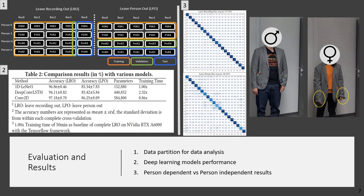A leave recording out and leave person out scheme were employed inside deep learning methods, showing results up to 97% for leave recording out or user-dependent scenario and up to 86% for leave person out or user-independent scenario.